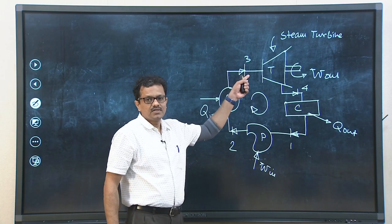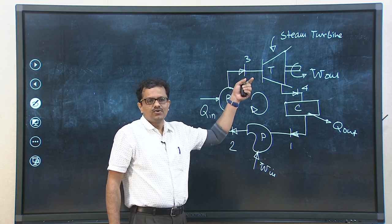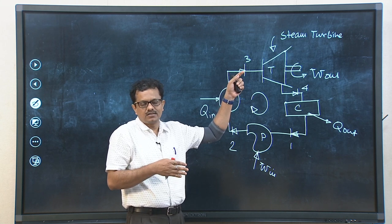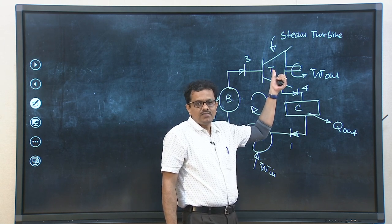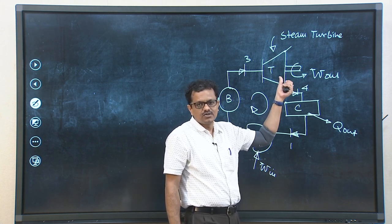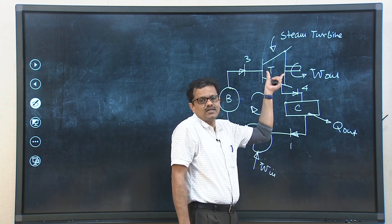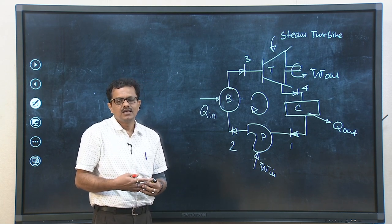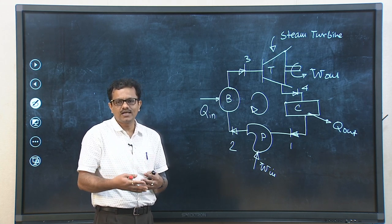Steam at state point 3 is at high pressure and high temperature. When that high pressure, high temperature steam flows through the turbine, energy conversion takes place. From the flowing stream, thermal energy is converted into mechanical work or shaft work. This energy conversion takes place inside the turbine. Essentially the turbine is an energy conversion device — a prime mover — used to convert thermal energy of the flowing stream into mechanical work or shaft work.